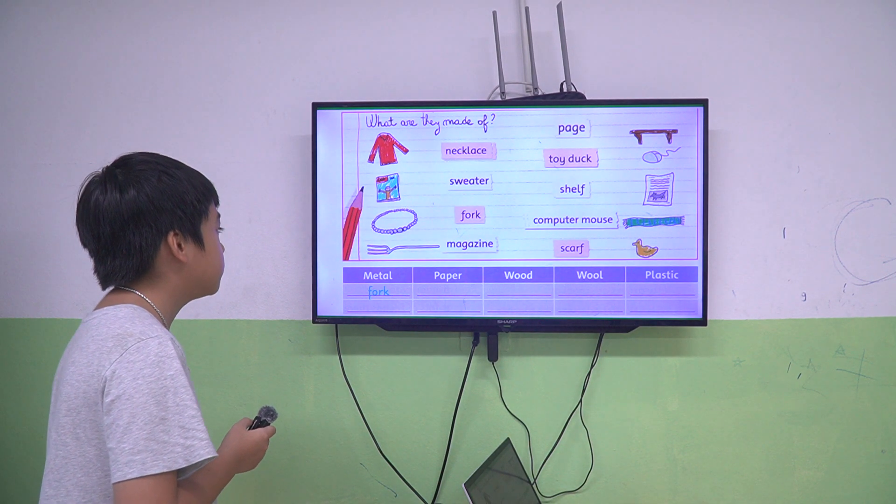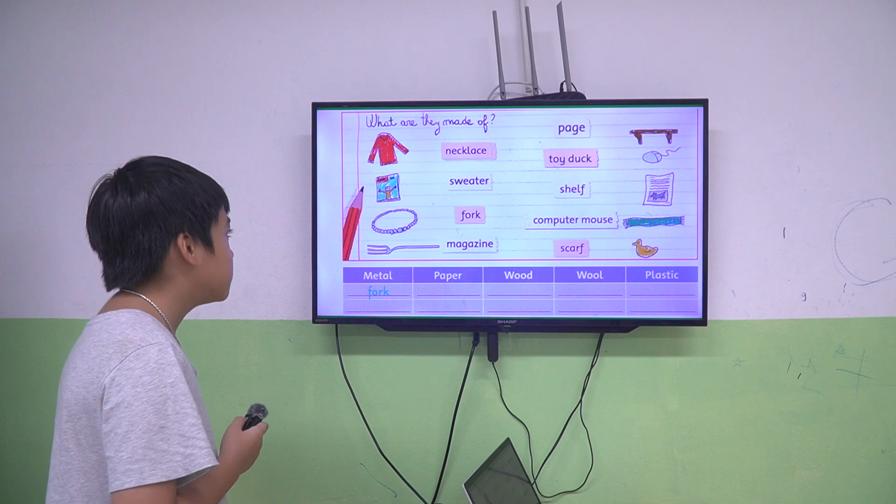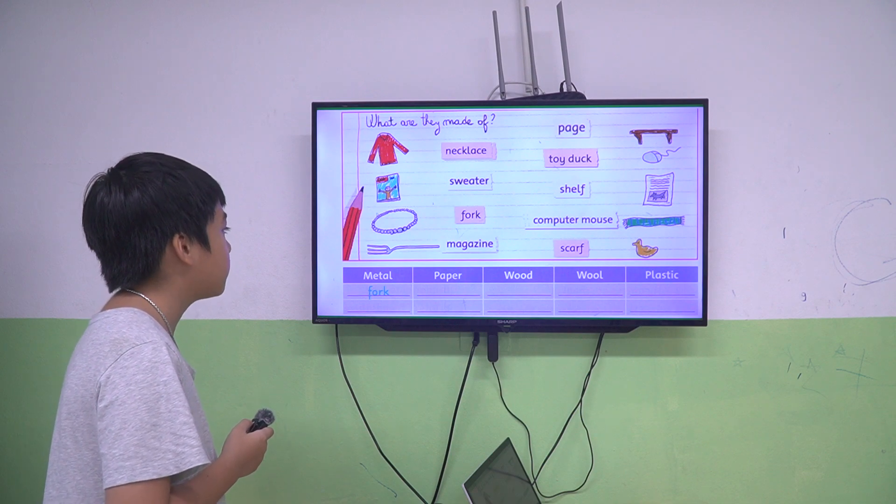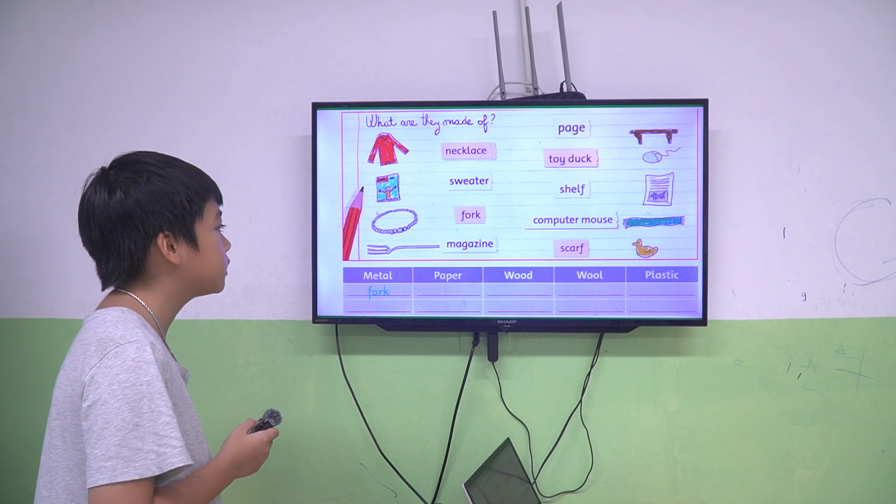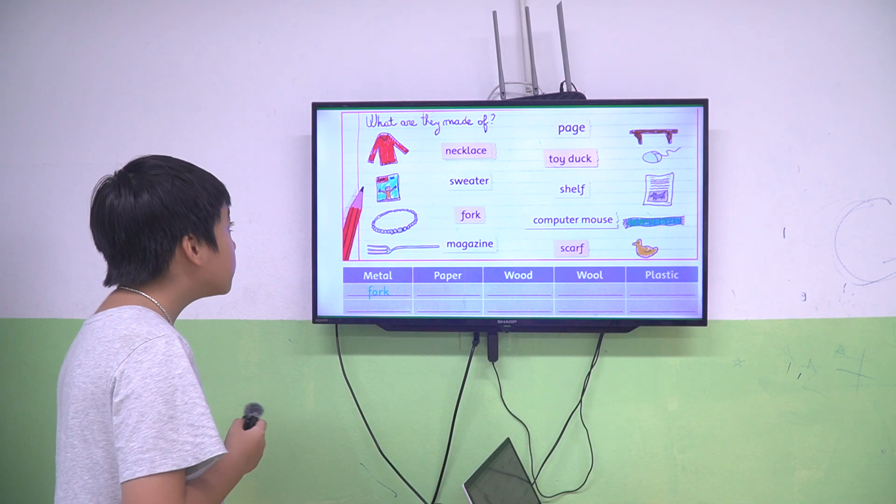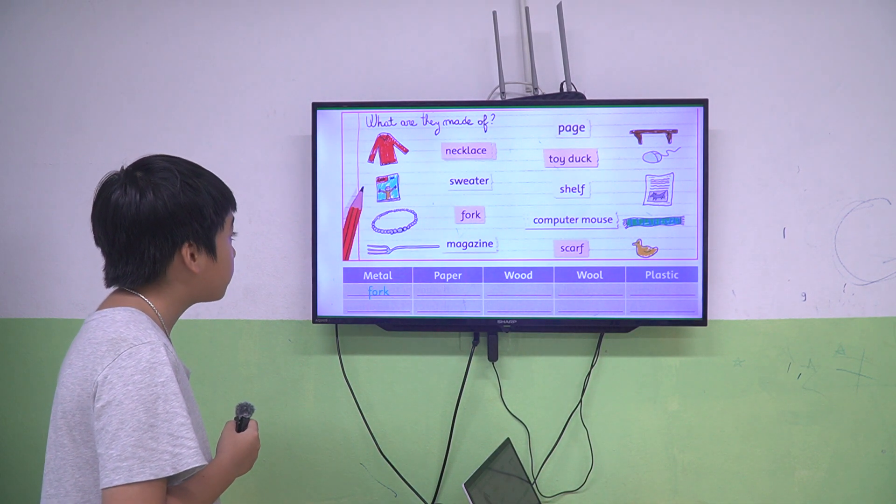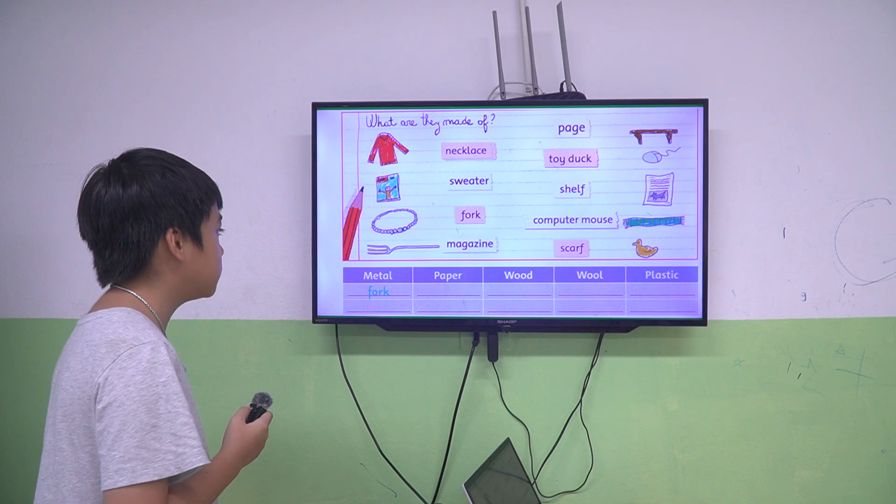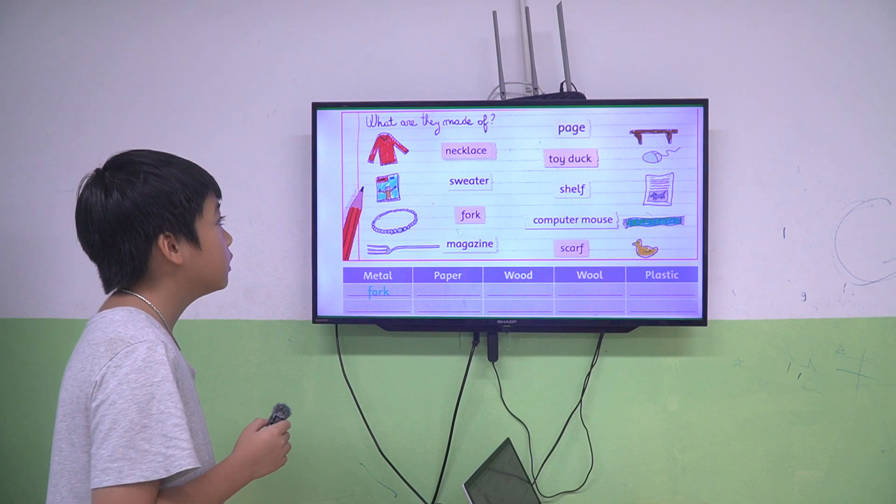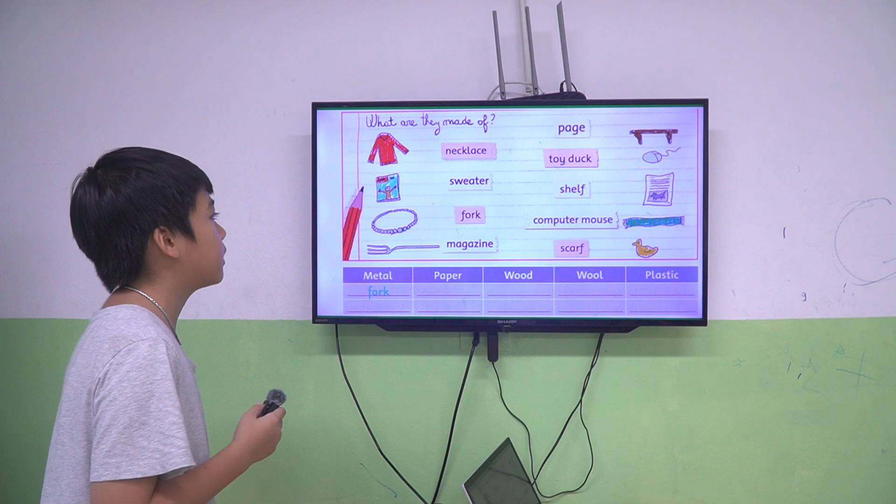The necklace is made of metal. The sweater is made of wool. The fork is made of metal. The magazine is made of paper. The pad is made of paper.